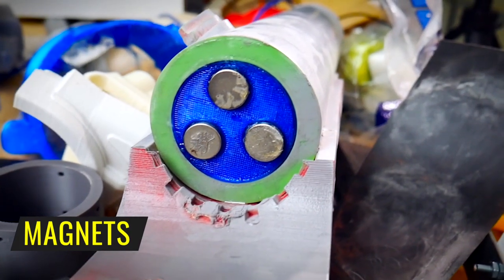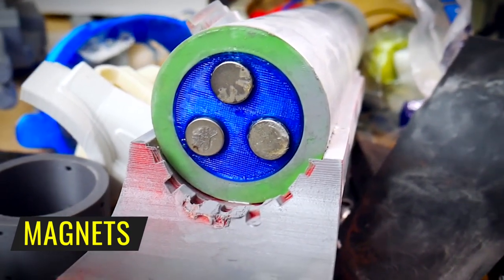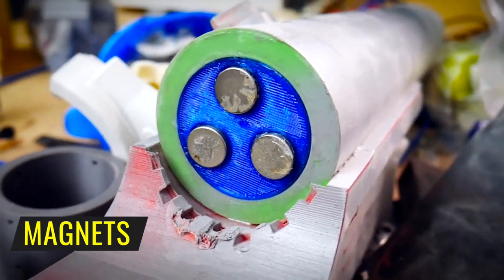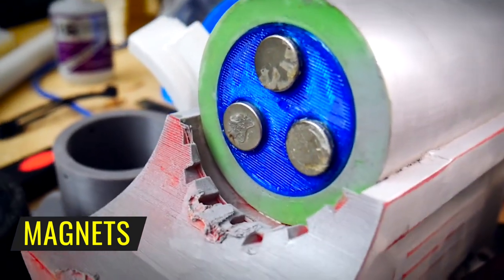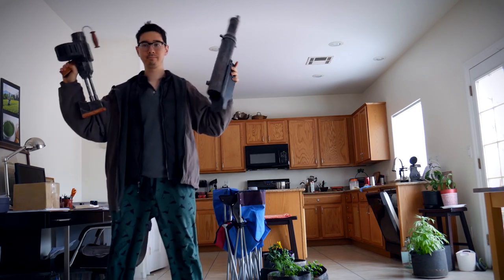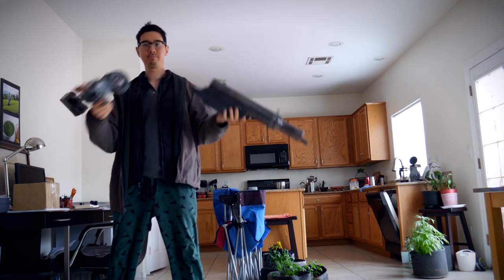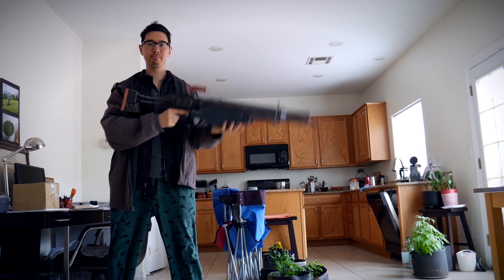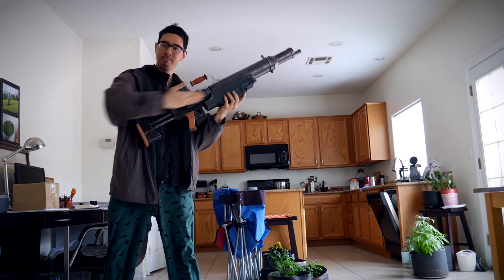One optional but nifty feature I put into my rifle was the inclusion of magnets where the barrel and the rest of the rifle meets, allowing me to literally break the rifle in half, safely of course, and have an easier time traveling or stowing it in my luggage. Pretty cool, eh?